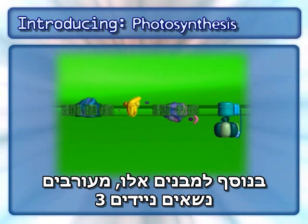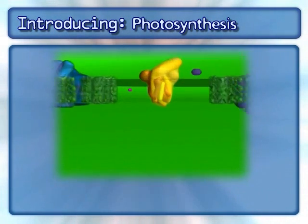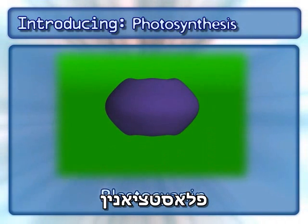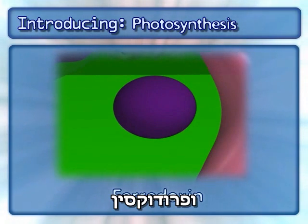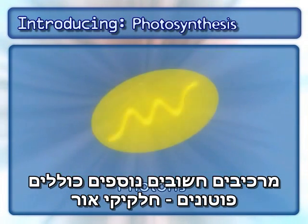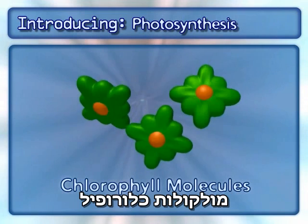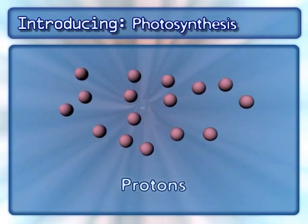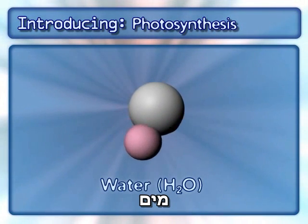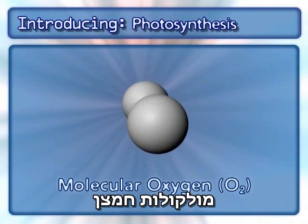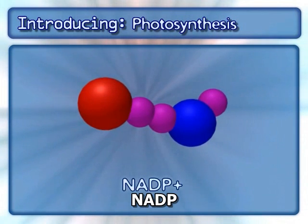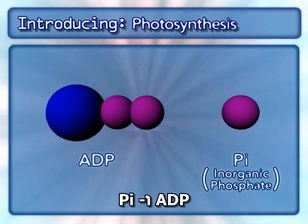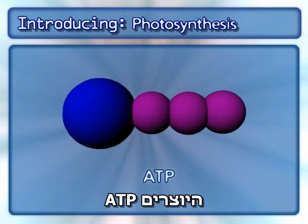In addition to the complexes, three mobile carriers are also involved: plastoquinone QB, plastocyanin, and ferredoxin. Other key components include photons, chlorophyll molecules, protons, water, molecular oxygen, proton and NADP and the electrons to form NADPH, and ADP and Pi, which combine to form ATP.